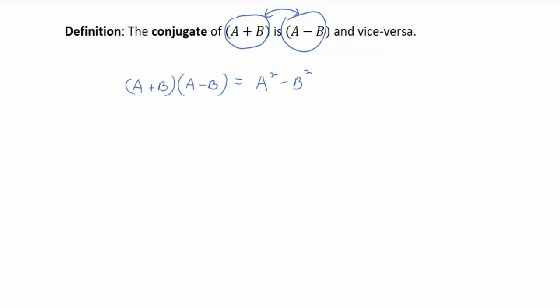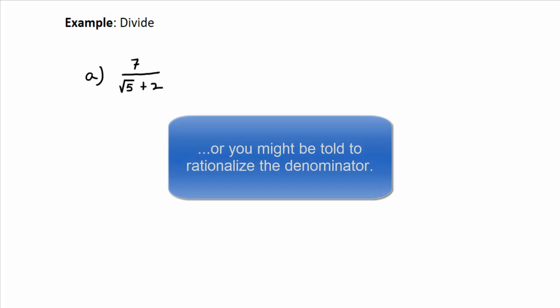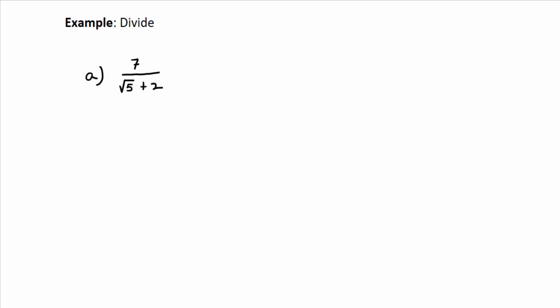And we can also use that fact to rationalize certain kinds of denominators. Now, when you see examples like this in your book or in the homework, the directions might say to divide or simplify. Doesn't really matter. It is a division problem. When you take seven divided by the quantity of root five plus two, that's a division problem. But the way we divide isn't like long division. The way we divide is we simply rationalize the denominator.